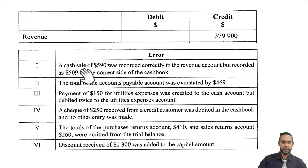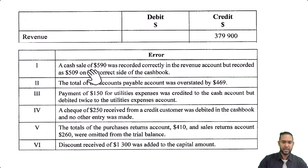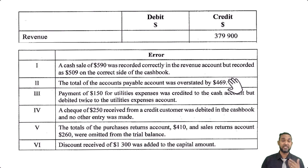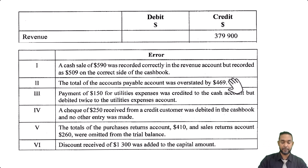Let's check if there are any other adjustments to cash. Error two: the total of the accounts payable account was overstated by $469. So for accounts payable, we have to subtract $469. Overstating means it's too much, so we subtract that figure.